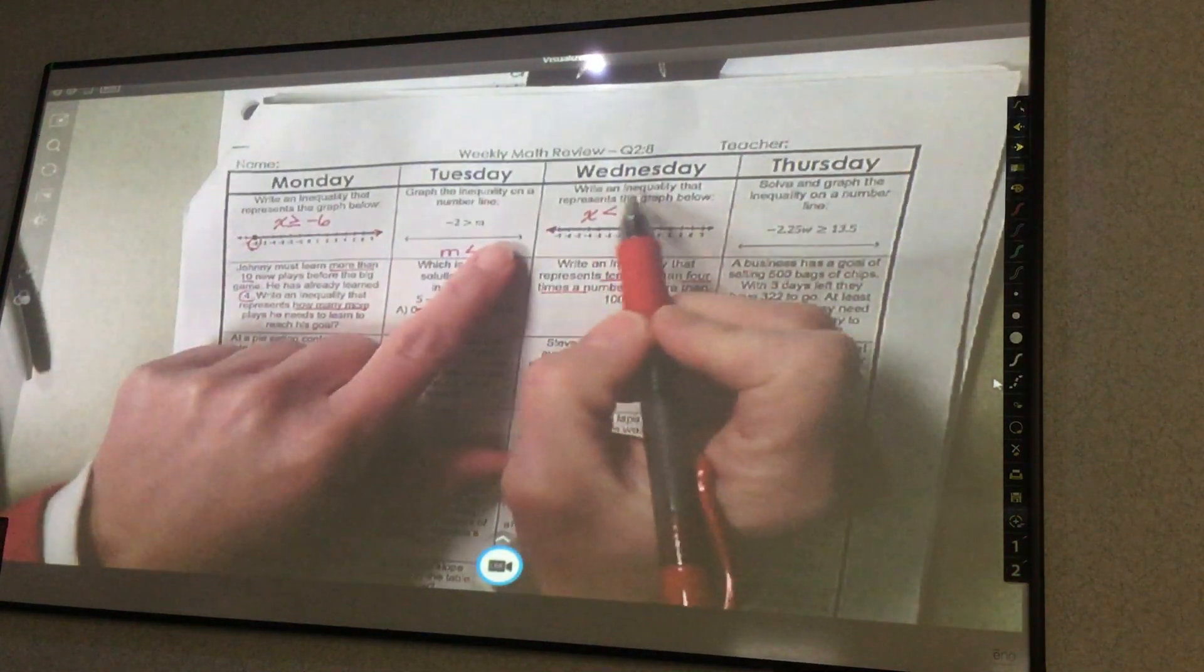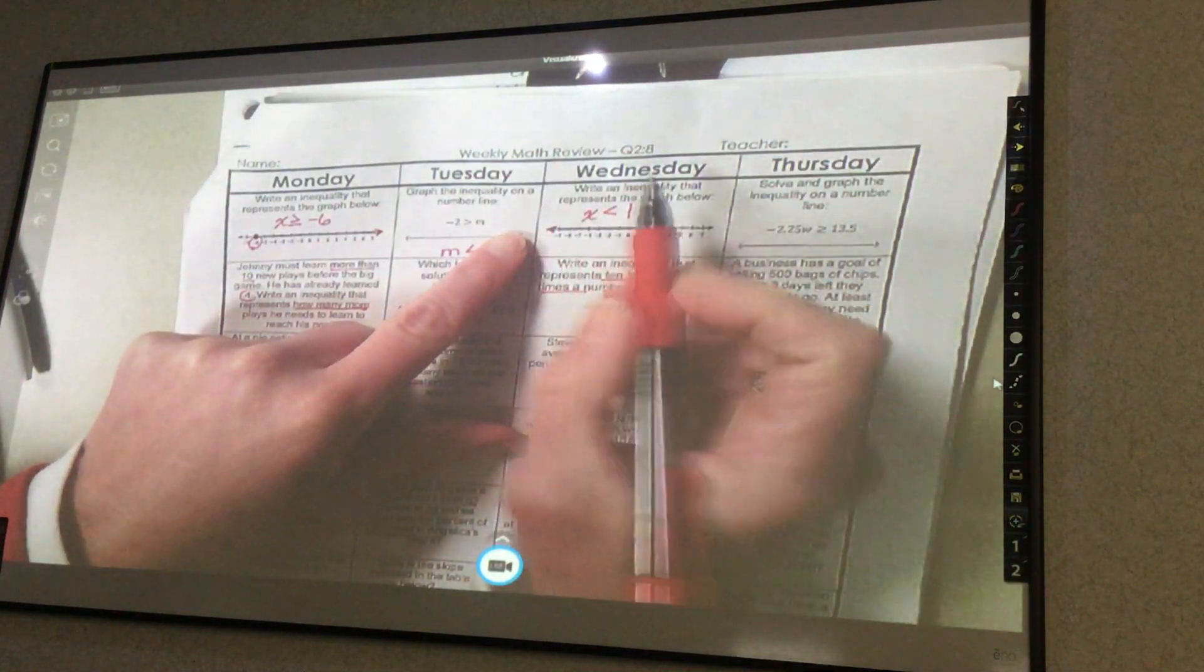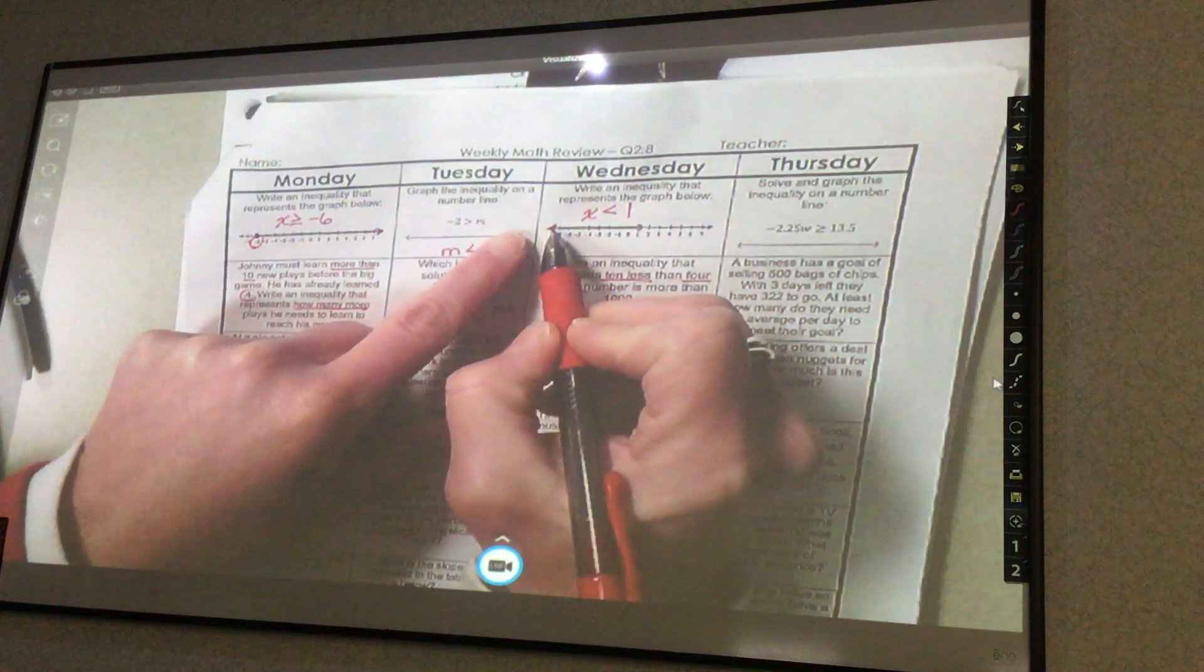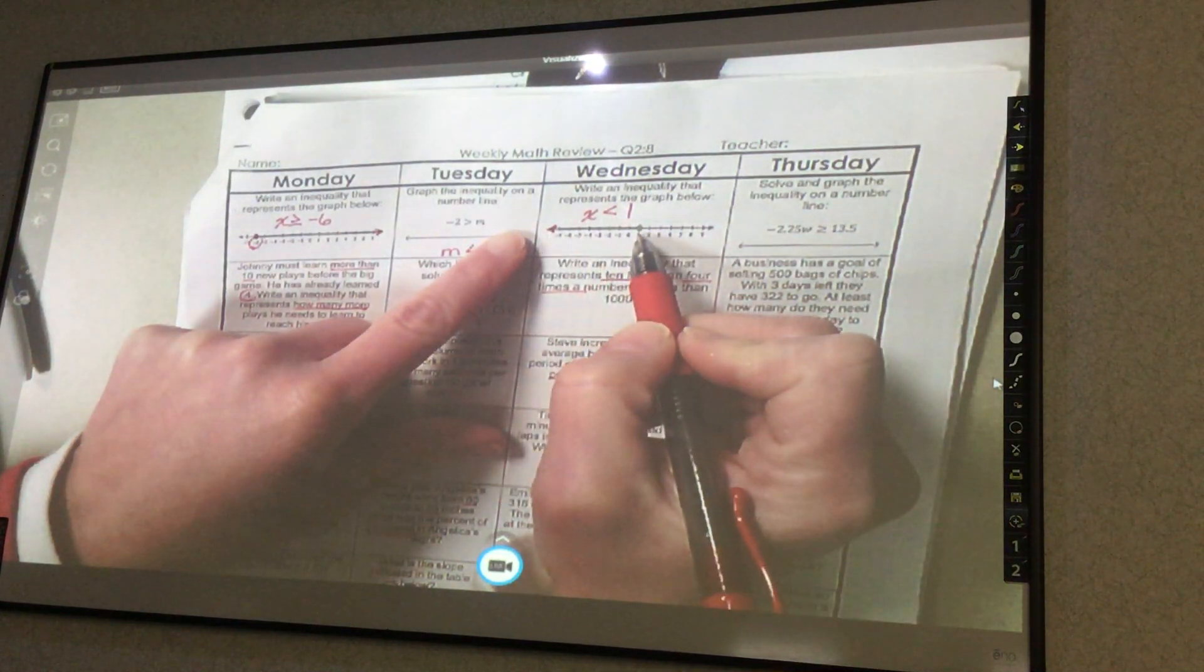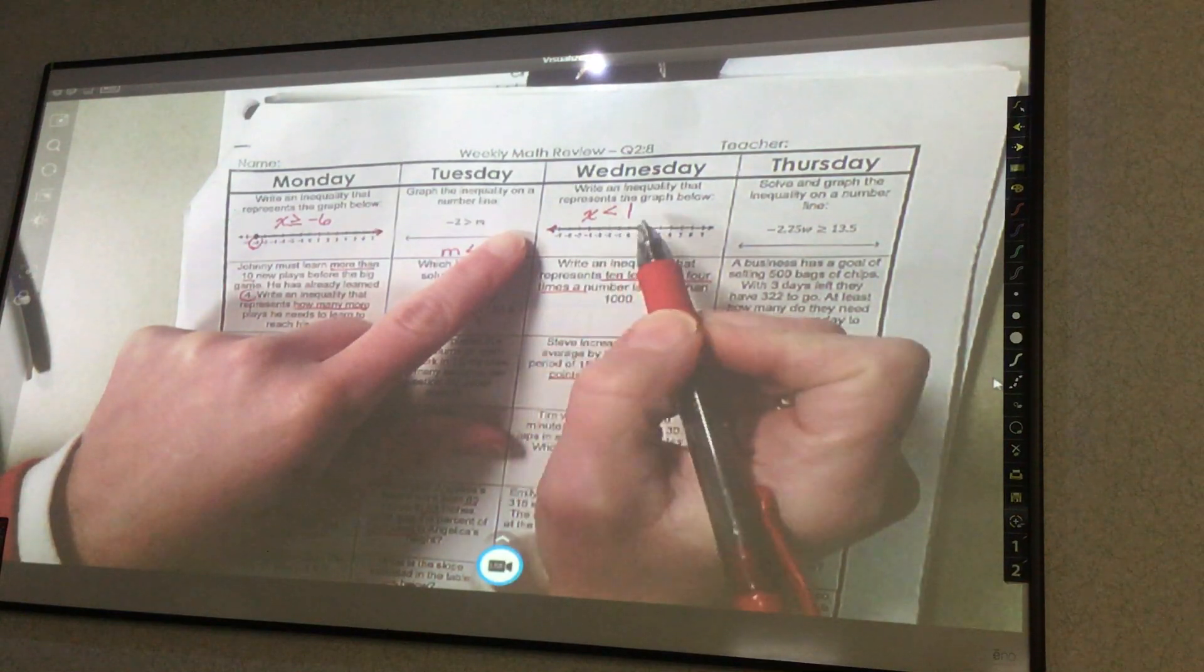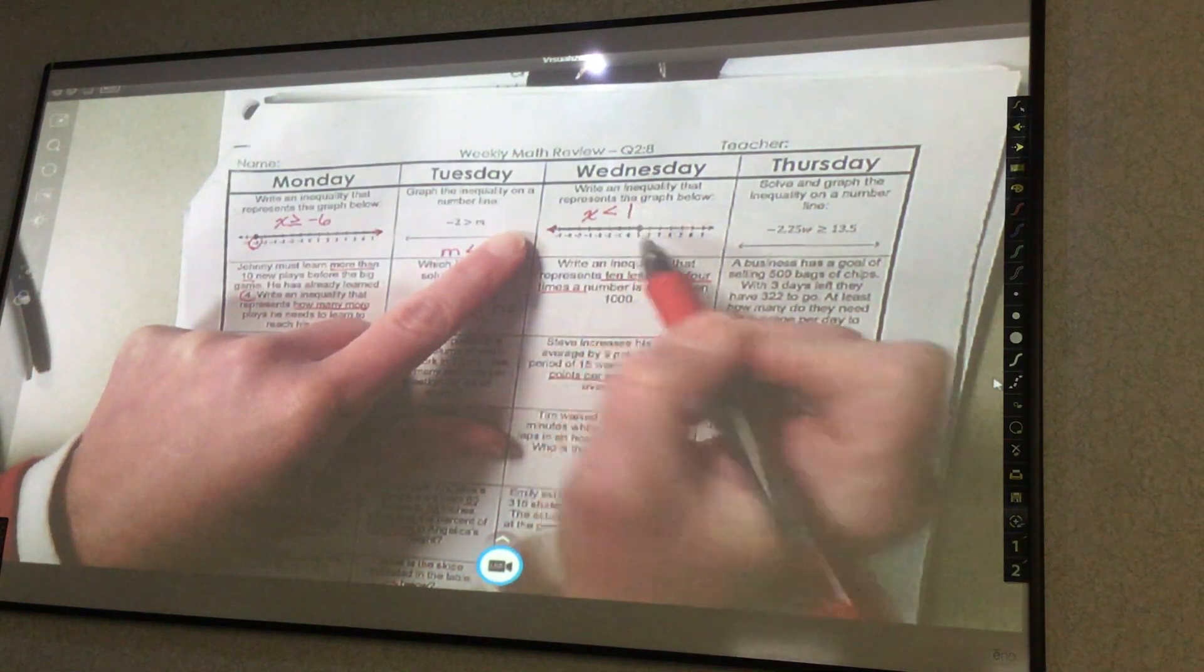We've got a quarter to week 8, write an inequality that represents the graph below. The arrow is pointing to the left, so I have x is less than, and it's an open circle, so it's not going to be equal to, but the number is 1.